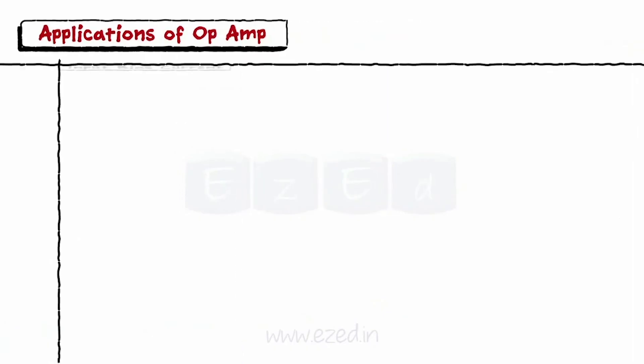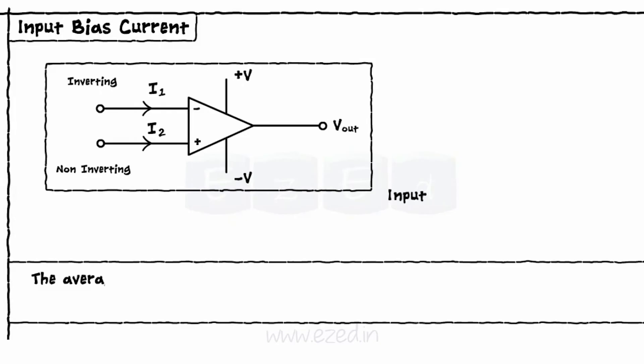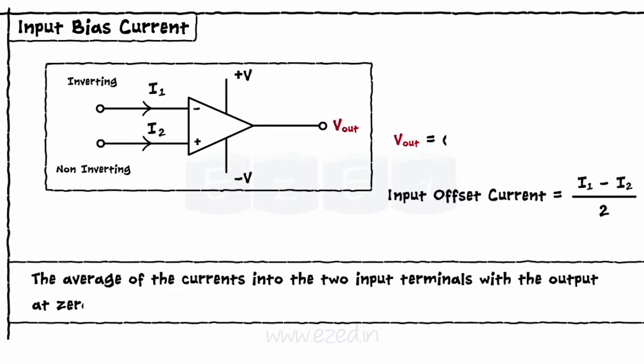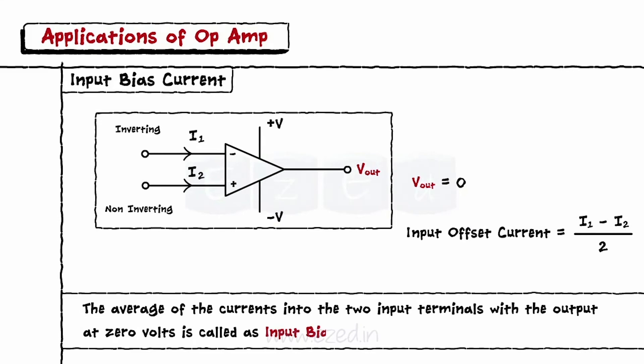The sixth term is input bias current. The average of the currents into the two input terminals with the output at zero volts is called input bias current.